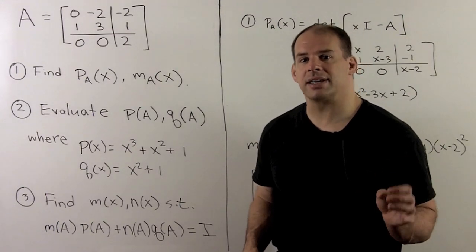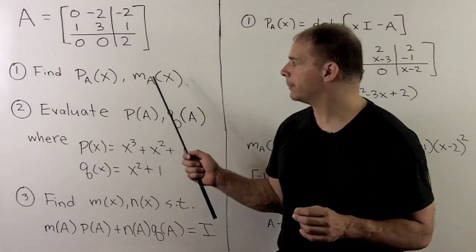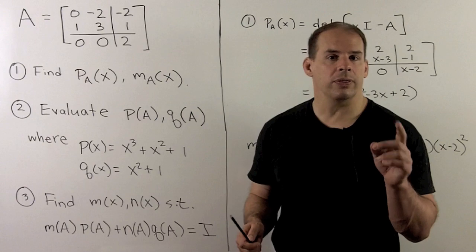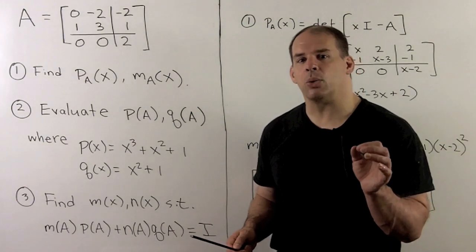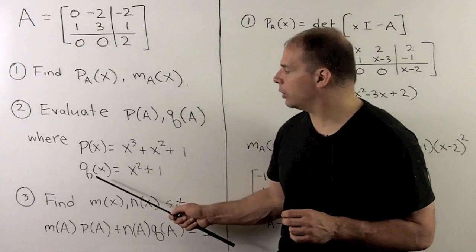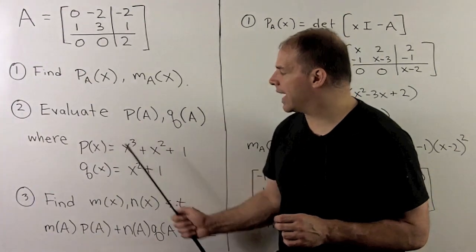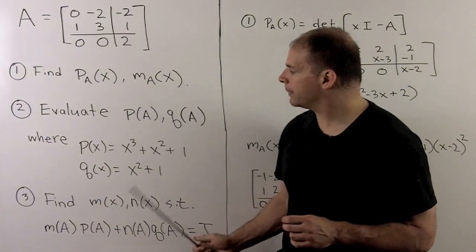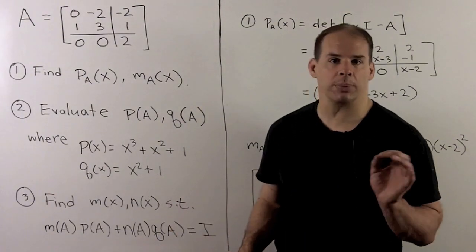First, I want to find the characteristic and minimal polynomials of A. With those, I then want to evaluate the following polynomials P and Q on A. So P of X is X cubed plus X squared plus one. Q of X is equal to X squared plus one.